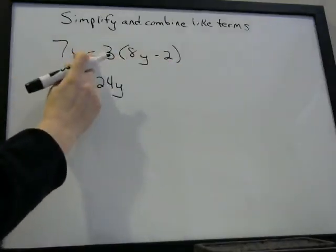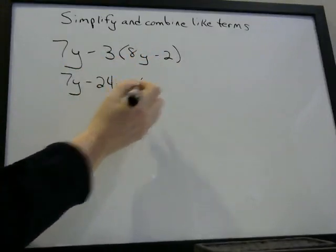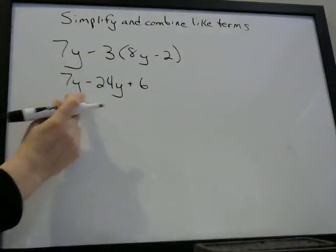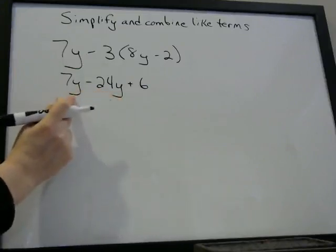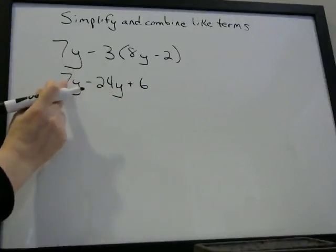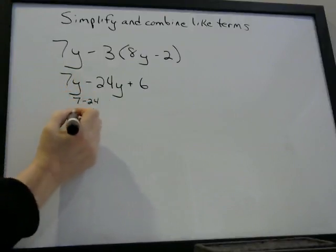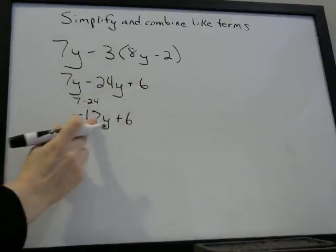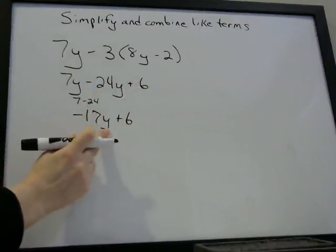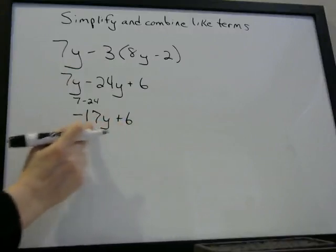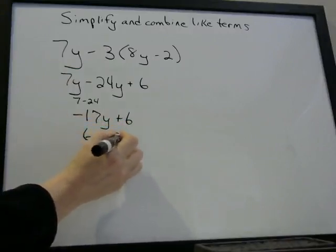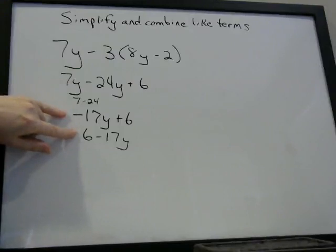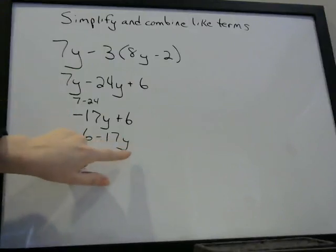Continuing with the distributive property: minus 3 times minus 2 is a positive 6. So now we have two Y terms beside each other we can combine: 7Y minus 24Y. We just look at the numbers — 7 minus 24 is minus 17Y. And we leave the plus 6. We can't combine further because one has a Y and the other doesn't. So the answer is minus 17Y plus 6, or we can write it as 6 minus 17Y using the commutative property.